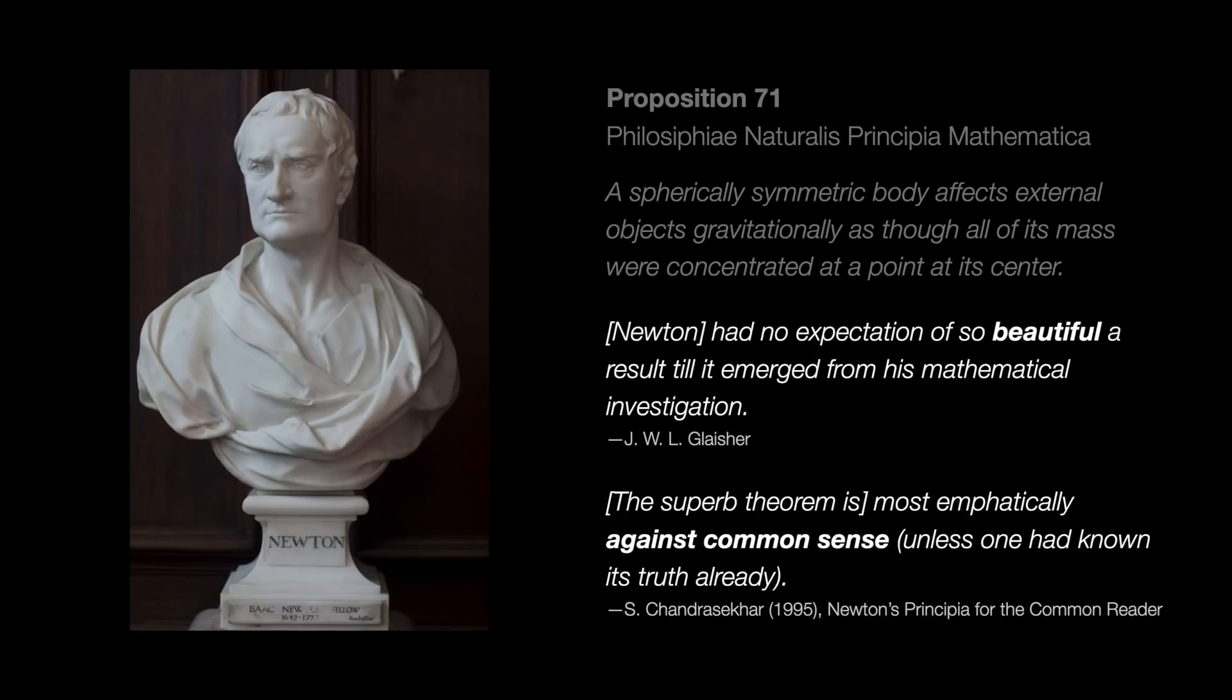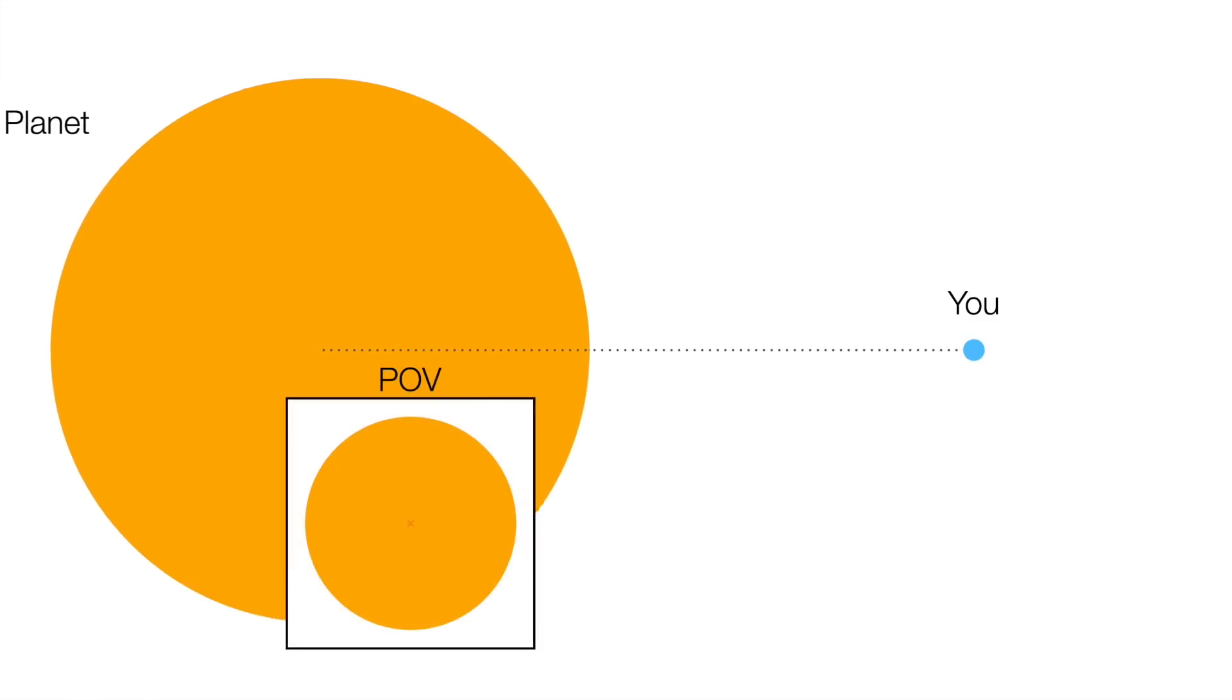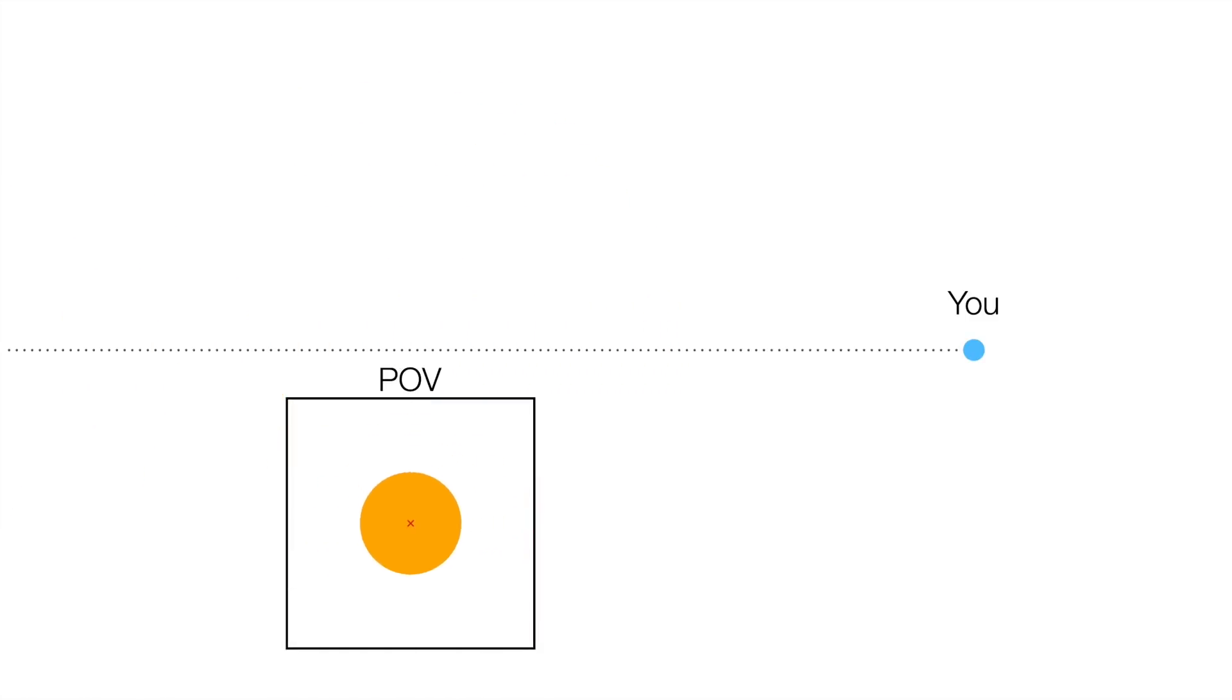This is one of those things that, once you learn it, before long you start to have the feeling of, yeah, well, of course, I mean, what else could it be? But Newton's superb theorem is surprising. Or better yet, against common sense, as Chandrasekhar put it. I mean, I can sort of believe it if I think about the extreme case. Imagine you go really far away from the planet. From out here, it might as well just be a point anyway, so sure, the force better be aimed in that direction. The force also becomes so small at this distance that we kind of stop caring about it anyway.